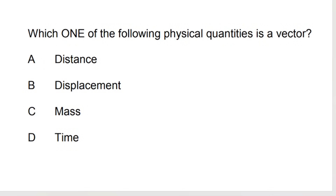The next question: which one of the following physical quantities is a vector? Distance is a scalar, mass and time are both scalars. Therefore the answer is displacement, which is a vector.